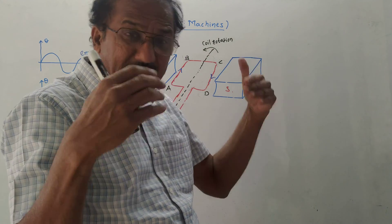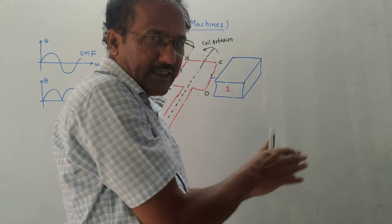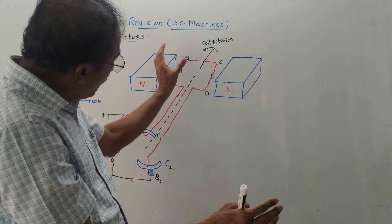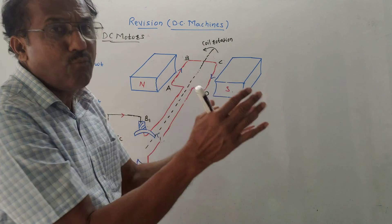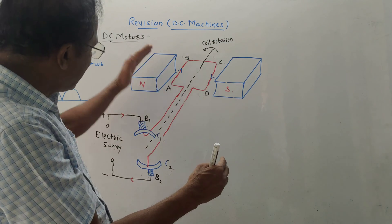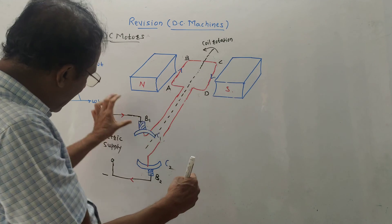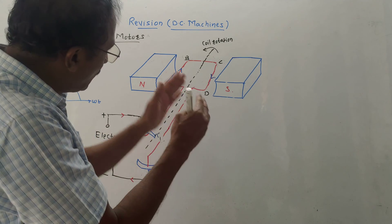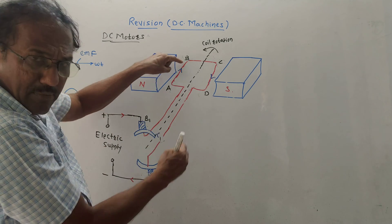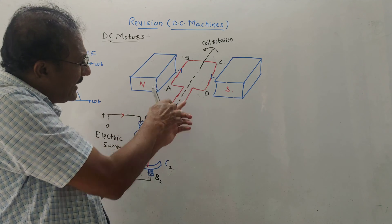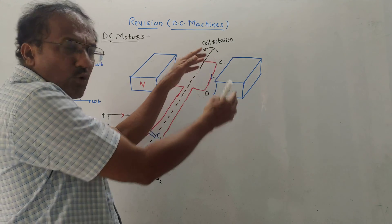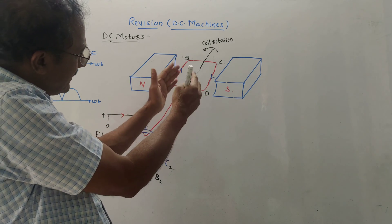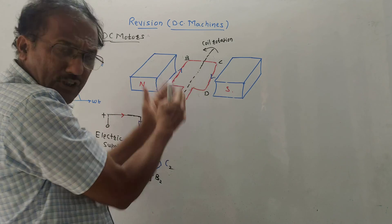According to Fleming's left-hand rule — in DC generator it was Fleming's right-hand rule — the rotation of coil takes place. Because force is exerted since there is magnetic field between north and south pole and we are applying electricity, the coil AB is moved in a downward direction and CD is moved in the upward direction. So the rotation of coil takes place.